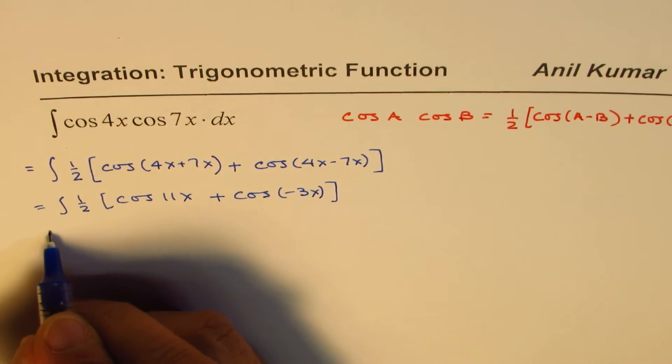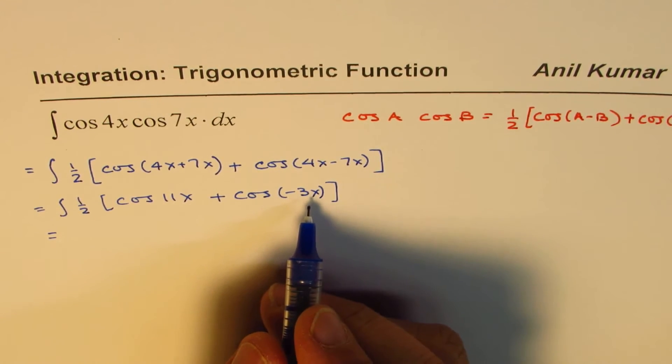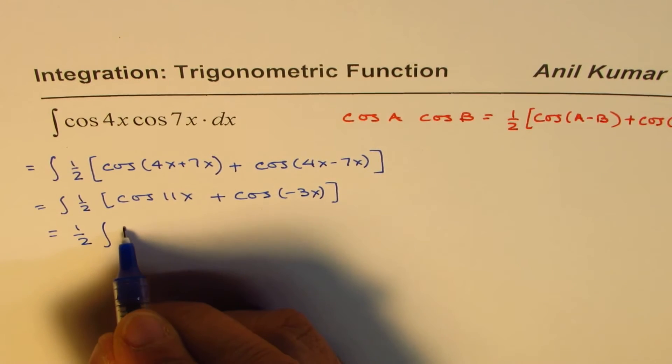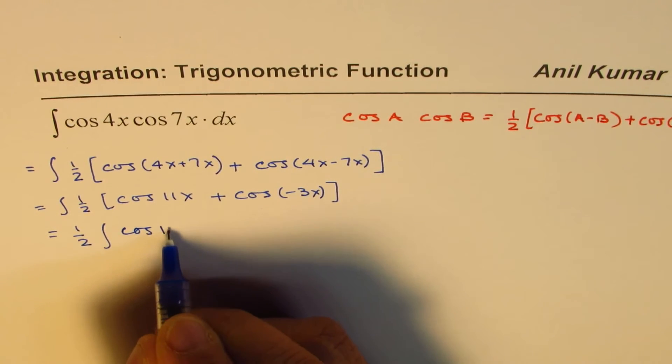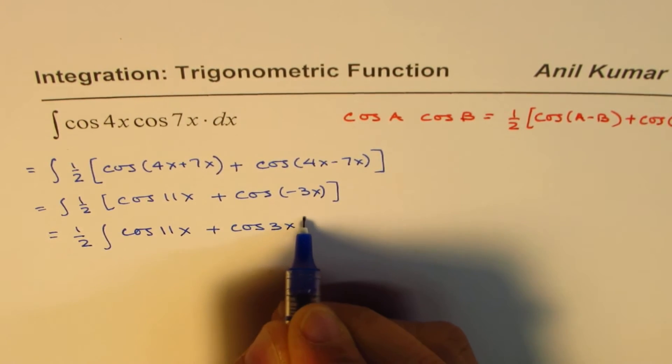So this could be written as half of [cos 11x + cos(-3x)]. Now, cos(-3x) is the same as cos(3x), so we could change it to cos(3x).